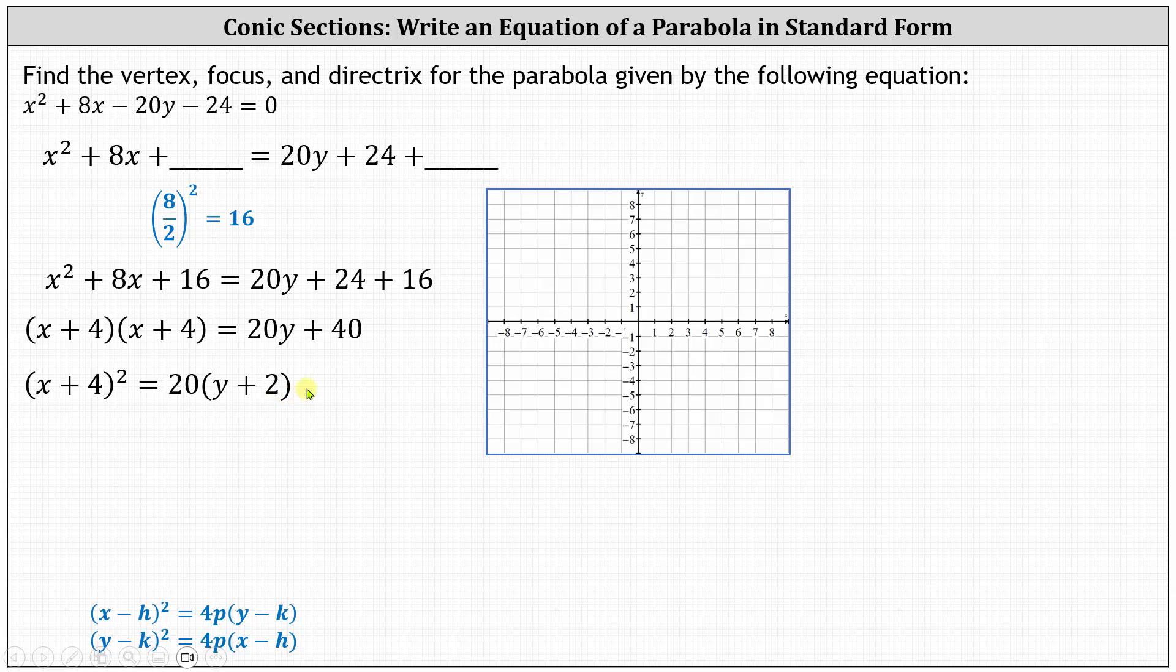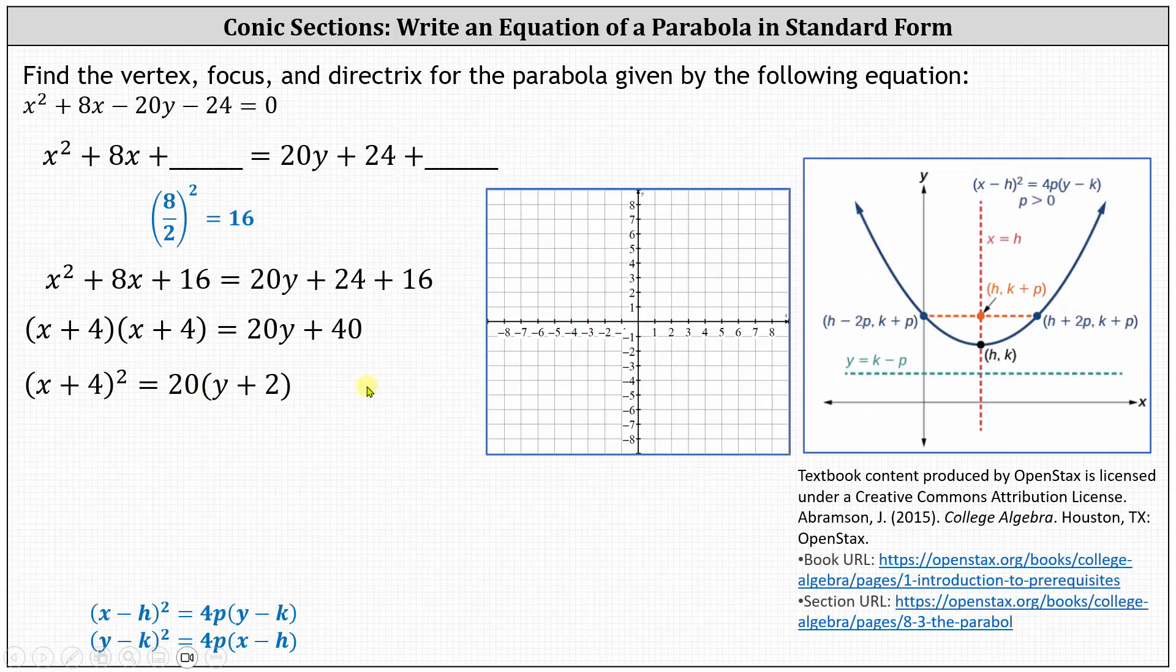The equation is now in standard form for a parabola. Again, the x part is squared, indicating the parabola will open up or down. But because four p is equal to 20, p is positive, we now know the parabola will open up, and will resemble the parabola shown here on the far right in our notes.